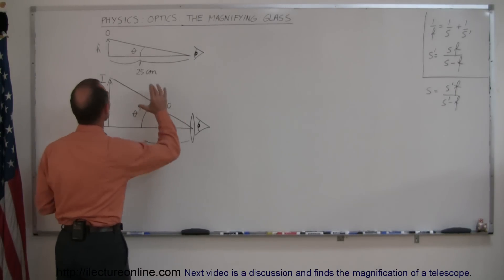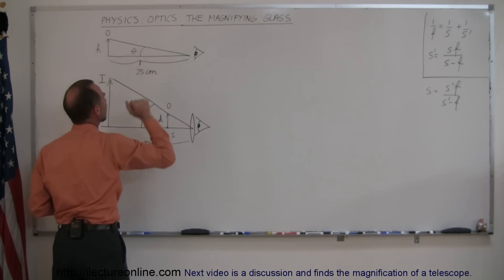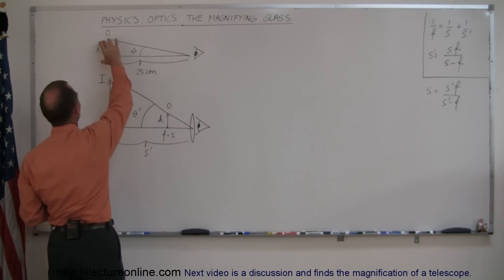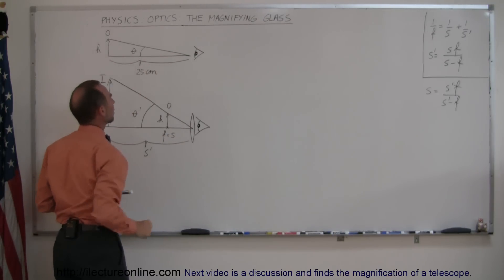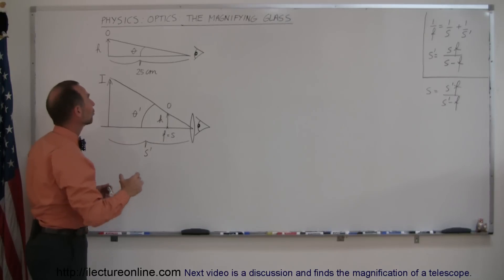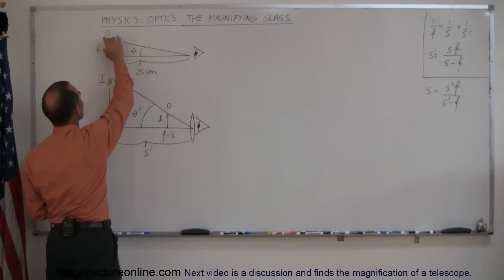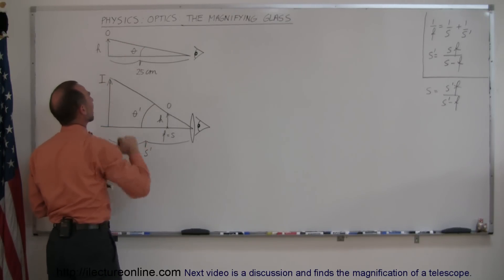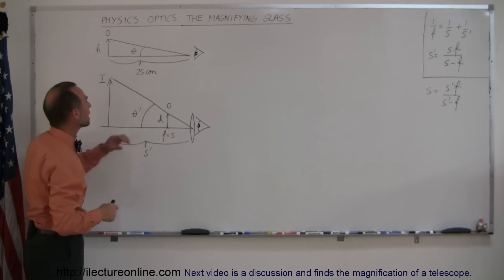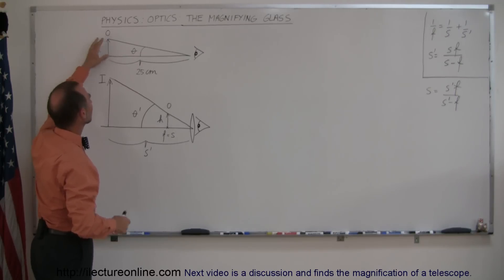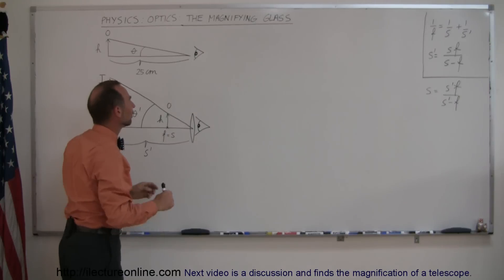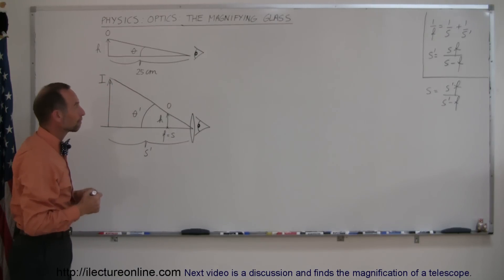Here we have an object that we look at without any optical instruments. It has a height h and we place it 25 centimeters away from the observer, so the angular size of the object is equal to theta. Theta is the angular size, meaning it will be a ratio of the height to the distance of that particular object.